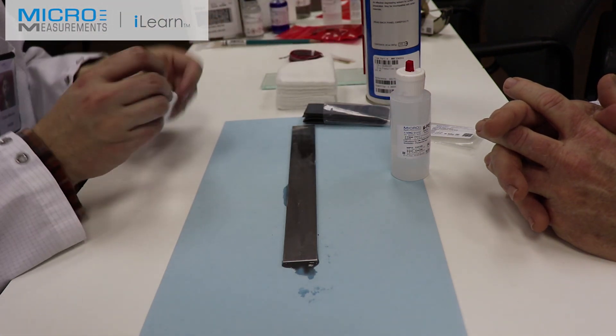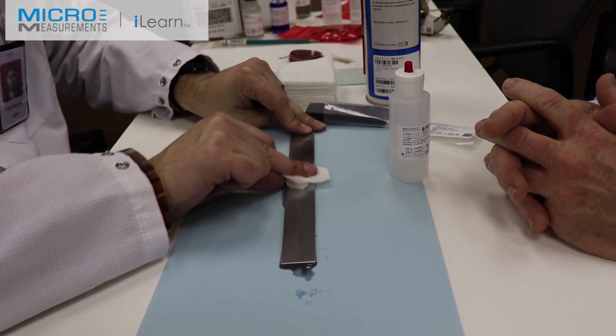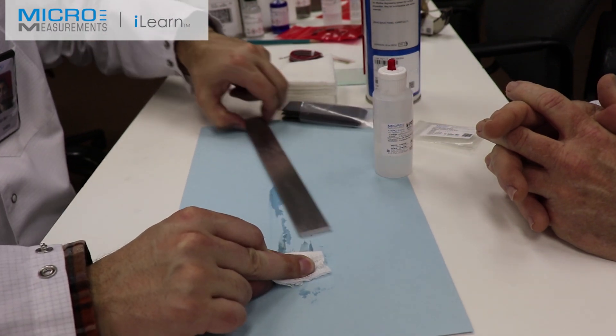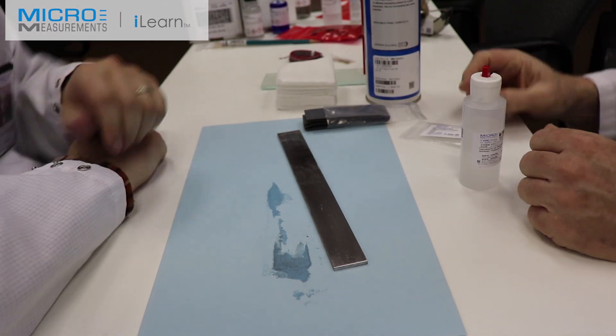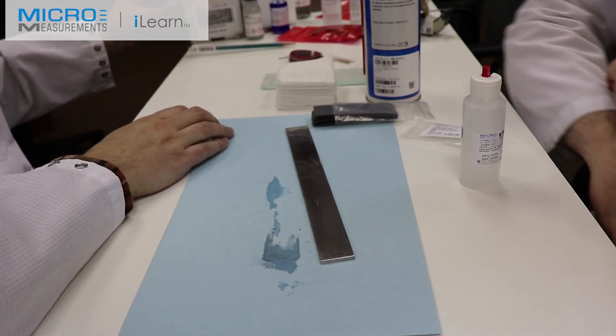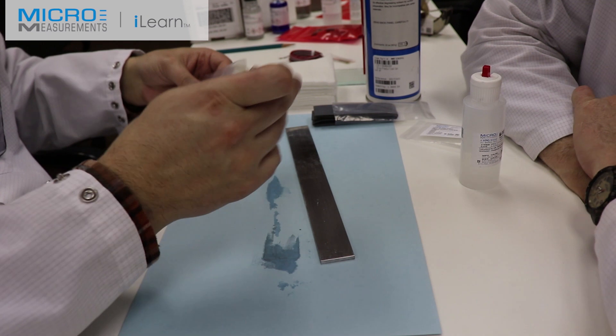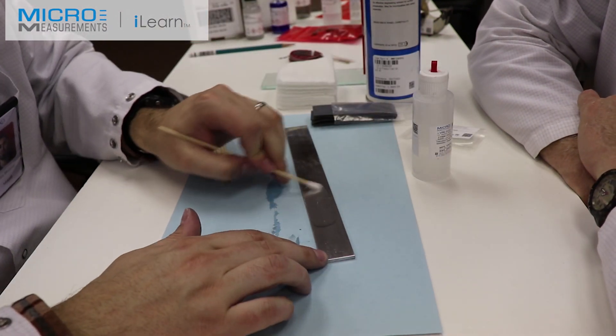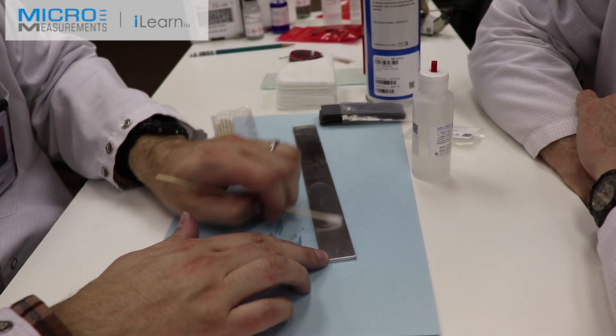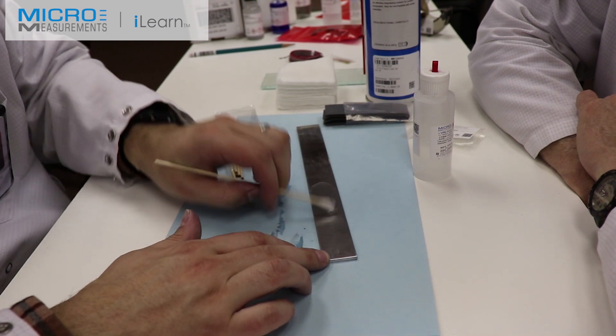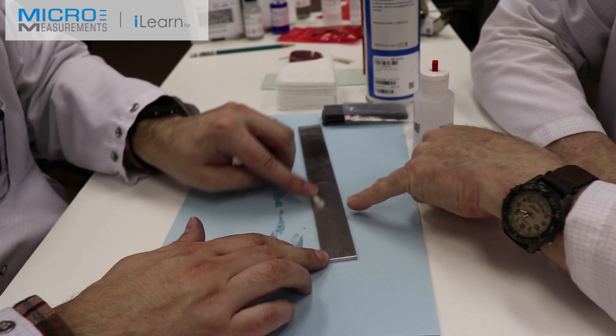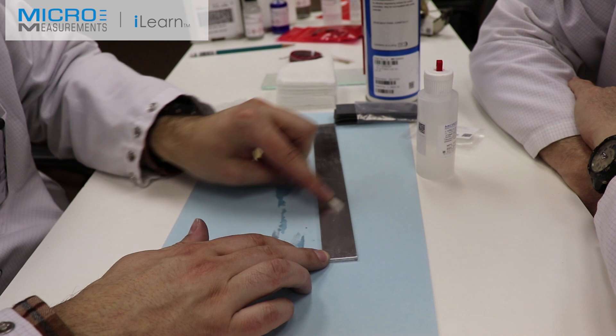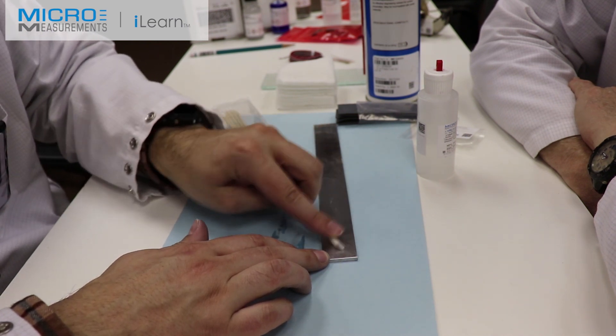As we did before, he's going to take a clean dry gauze sponge and absorb the excess contaminated material off of his beam. He's now going to take a cotton tip applicator and scrub with the Conditioner A. We've abraded away the oxidization, and now we want to scrub and get away any ground-in contaminants. You notice his cotton tip applicator is turning a little dark. That says it's etching the material. The mild phosphoric acid solution is doing its job.